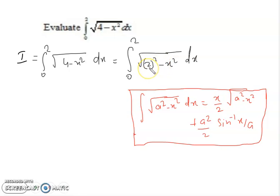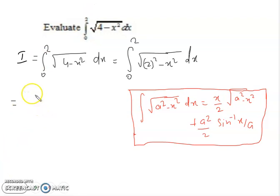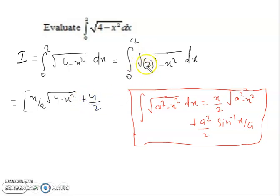The value of a here is 2 and x remains x. Now applying the formula, we write: (x/2)√(4 - x²) + (4/2) sin⁻¹(x/2), because a = 2 and a² = 4, so a²/2 = 4/2.